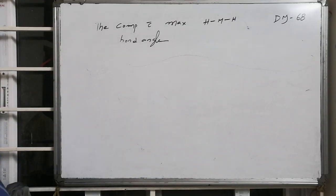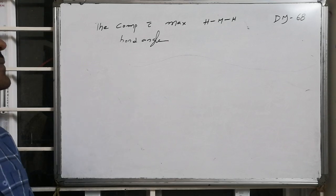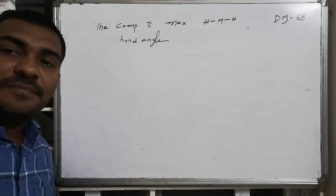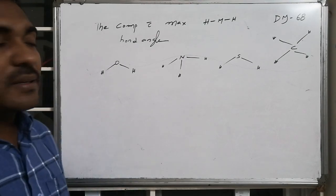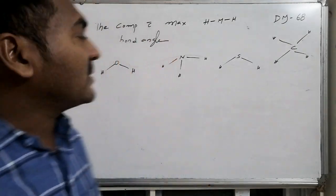The compound which among the following is having the maximum H-M-H bond angle. The corresponding compounds given are water, ammonia, H2S, followed by methane.